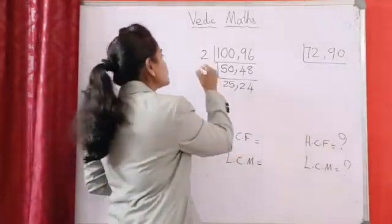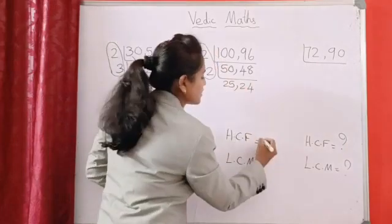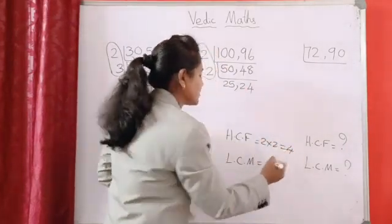Now, our HCF is 2 into 2. This is our HCF, 2 into 2. 4 is our HCF.